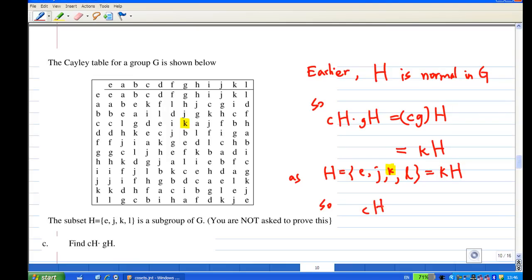So we conclude cH times gH equals H itself. Let's conclude the recording.